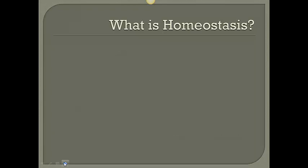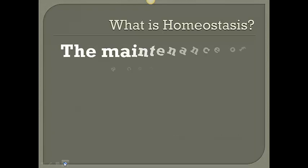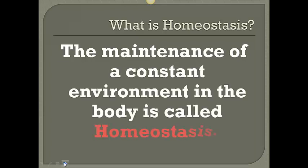So to wrap that all up: homeostasis is your body's way of maintaining a constant environment. If your body is in homeostasis, it doesn't matter if you step outside on a cold day or a hot day — your internal body temperature is always going to be 98.6 degrees Fahrenheit. It doesn't matter if you eat something really spicy or something really bland — your stomach is always going to be at an acidic pH. This is called homeostasis: keeping everything in your body constant as far as those different levels go.